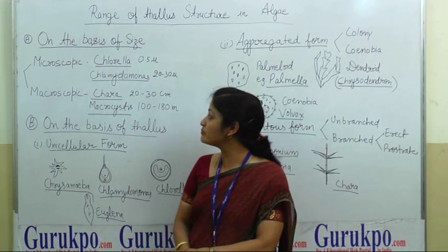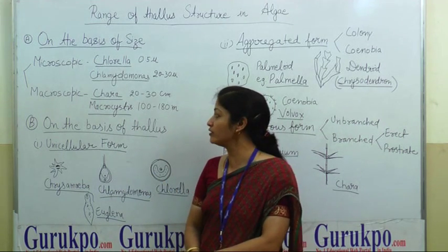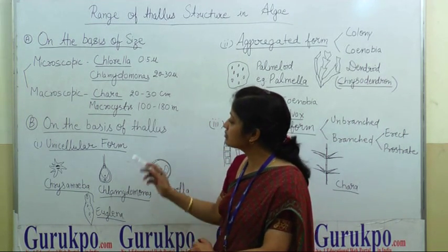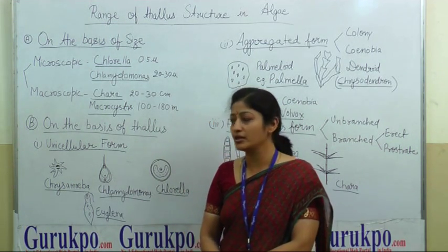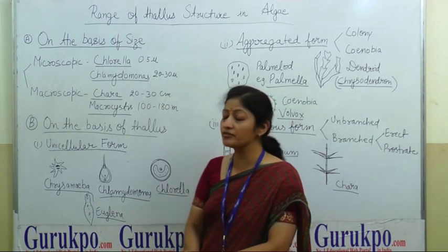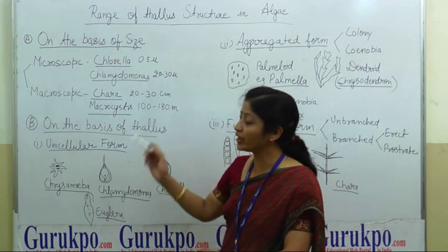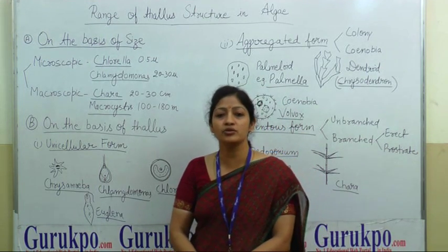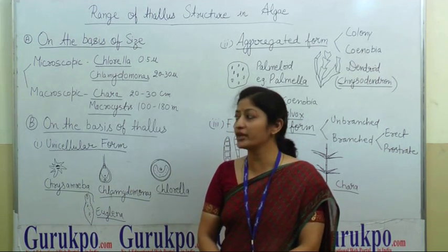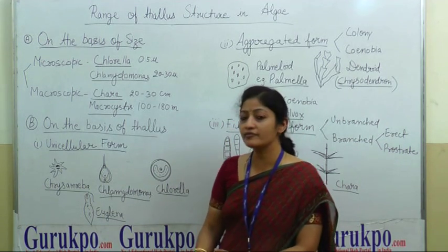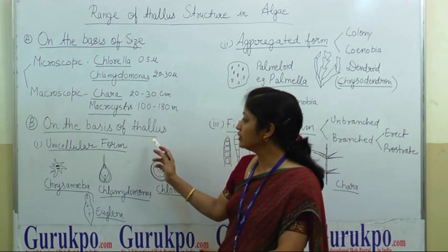In macroscopic algae, examples are Chara, which is about 20 to 30 cm long, and Macrocystis, which is about 100 meters large. Macroscopic algae can be seen with the naked eye, while microscopic algae require a microscope.